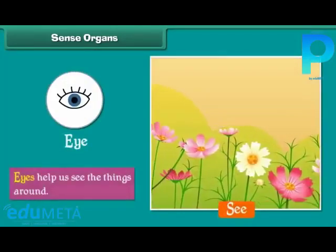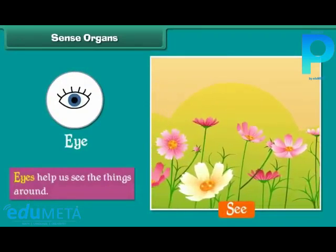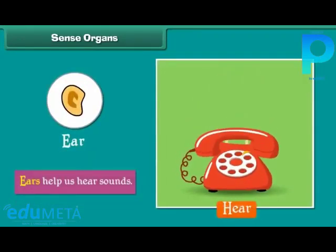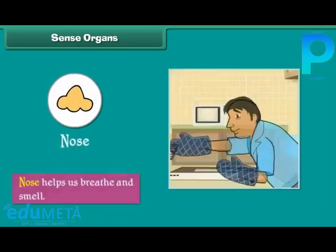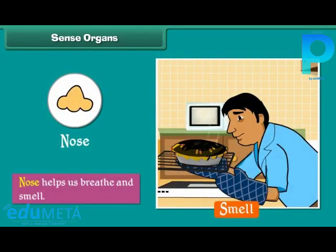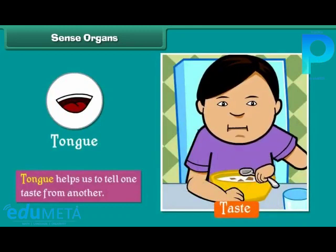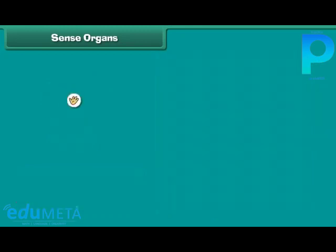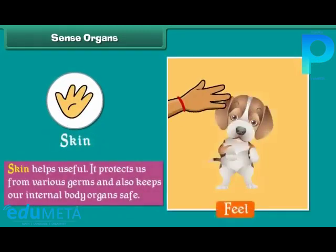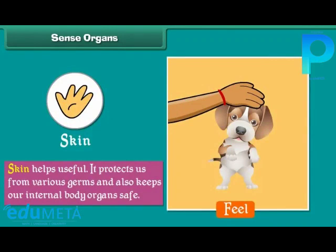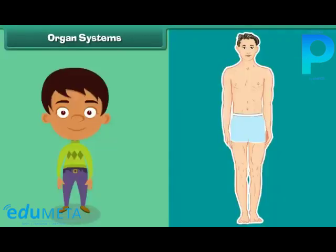There are five sense organs in the human body: eyes, ears, nose, tongue, and skin. Eyes help us to see the things around us. Ears help us to hear sounds. Nose helps us to breathe and smell. Tongue helps us to tell one taste from another. Skin protects us from various germs and keeps our internal body organs safe.